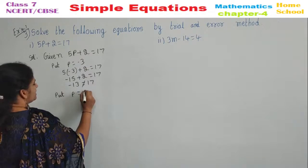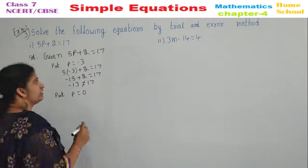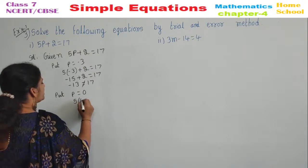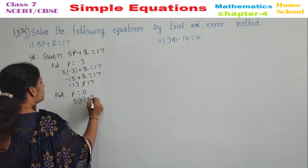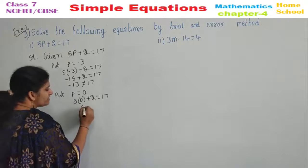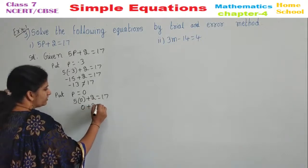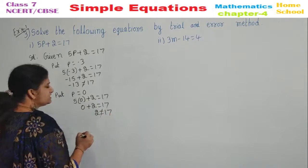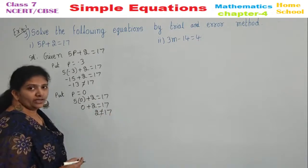Put P is equal to 0. Substitute in the equation where you have P. Substitute 0. So, 5 into 0 plus 2 equal to 17. 0 into everything is 0 plus 2 equal to 17. 2 equal to 17. Are these two equal? No, they are not equal.